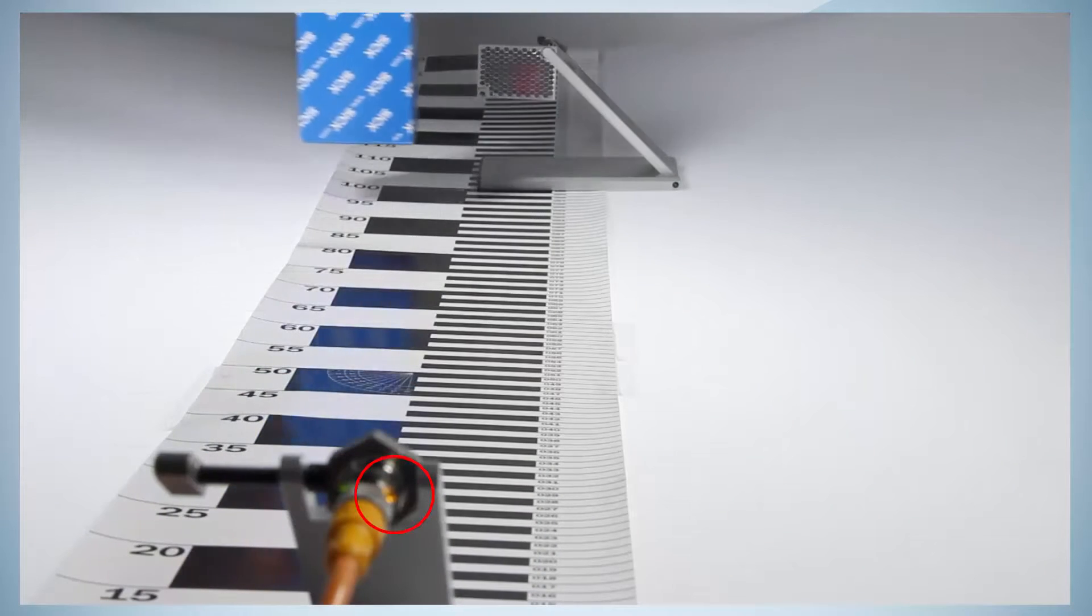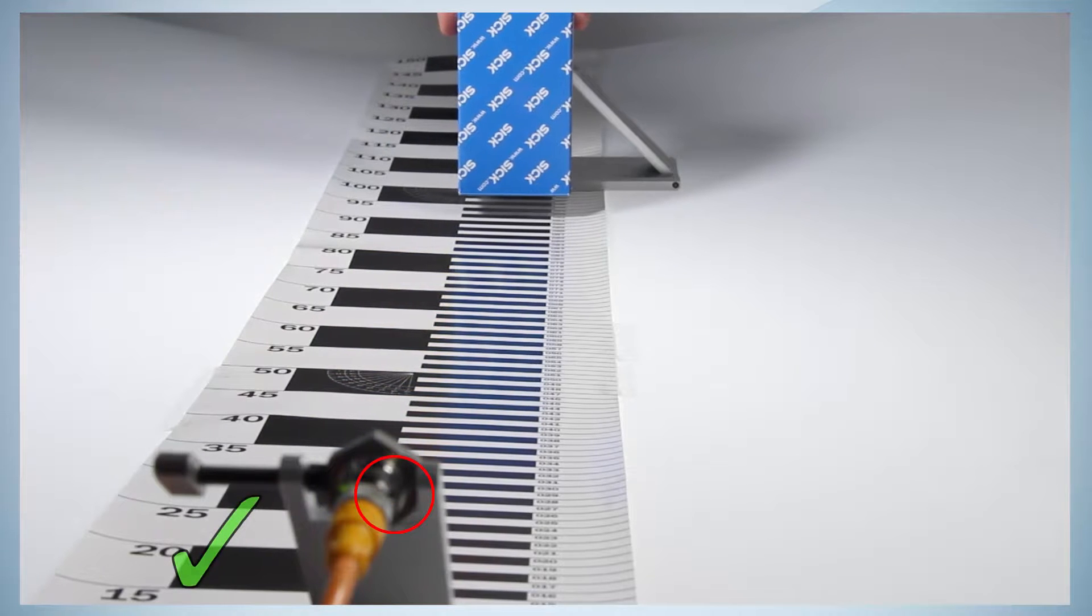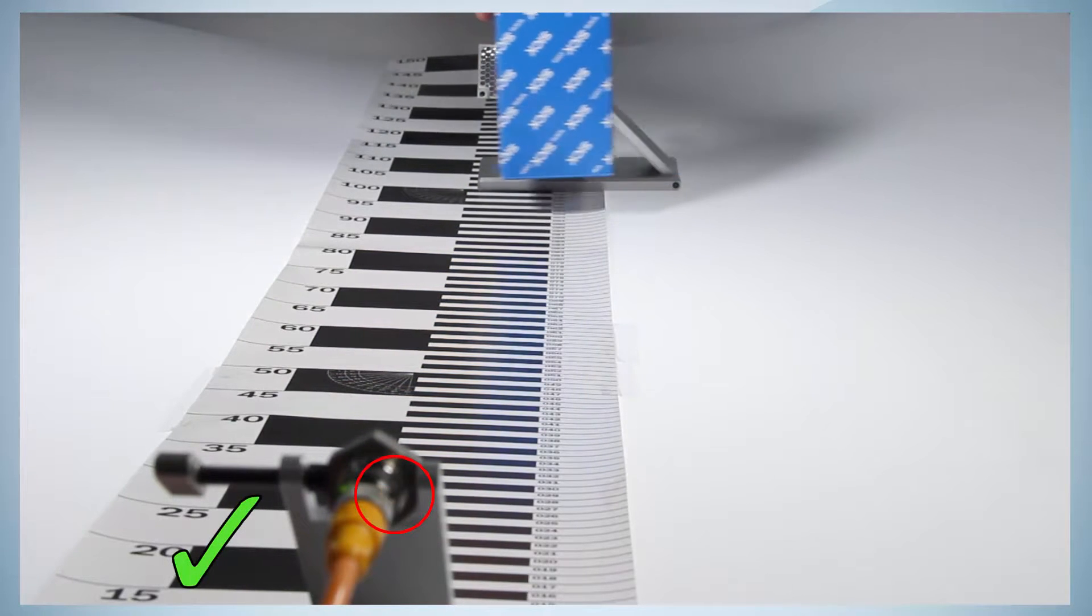After final alignment and adjustment, check the functionality by moving the target into the light beam and the sensor output will switch.